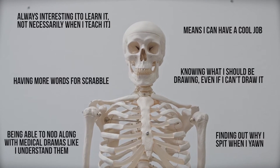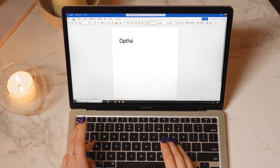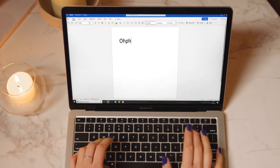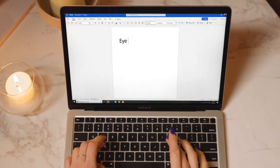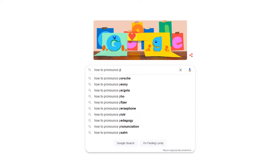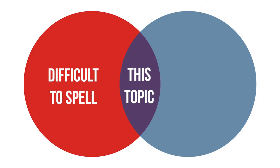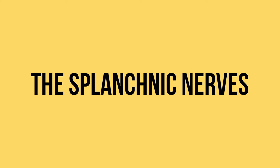There are lots of things I love about anatomy, but one thing I'm less keen on is routinely having to deal with words that I either struggle to spell or struggle to say. In this video I want to look at a topic that sadly fits into both categories: the splanchnic nerves.